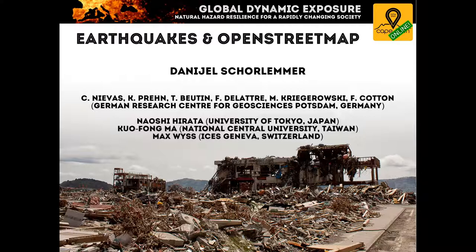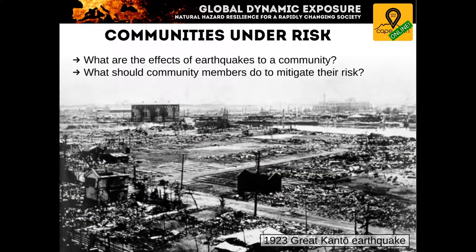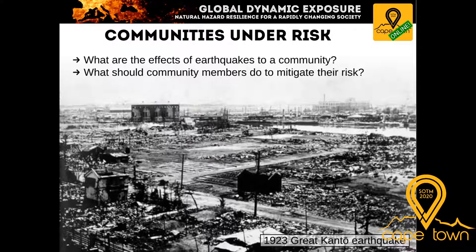Earthquakes pose a significant risk to around a third of the world's population. Here you can see the effects of the mega-earthquake and tsunami that hit the east coast of Japan in 2011. Japan is one of the countries with the highest chance to be rattled by earthquakes. In 1923, the Great Kanto Earthquake destroyed many parts of Tokyo and Yokohama — more than 500,000 buildings were destroyed and more than 100,000 people lost their lives. It's only a matter of time before another large earthquake will hit the Tokyo area.